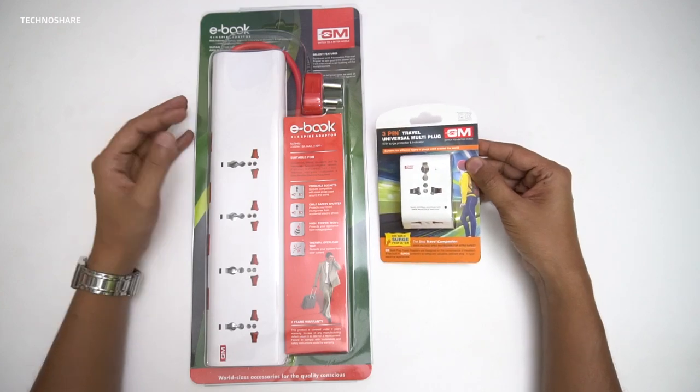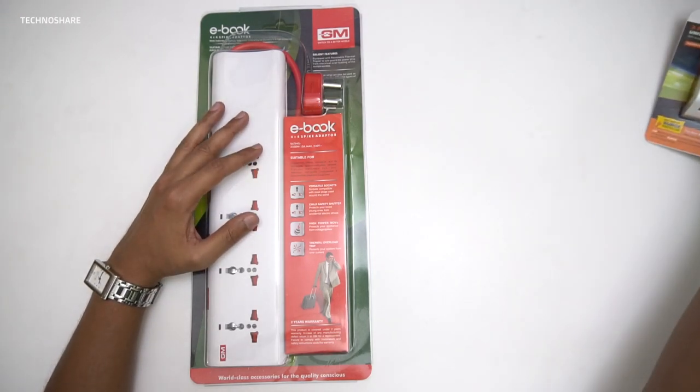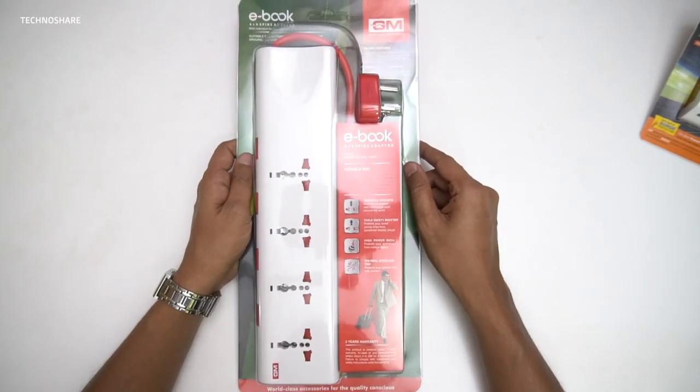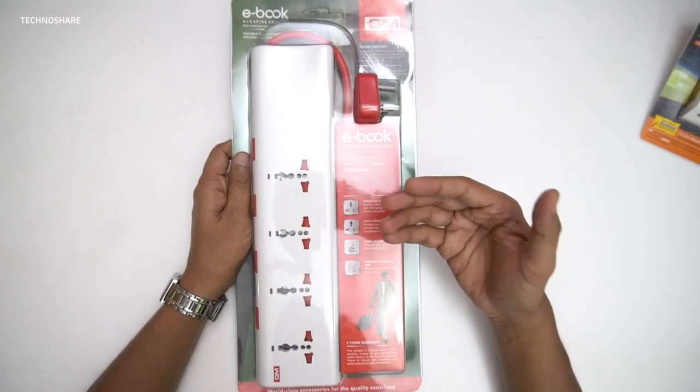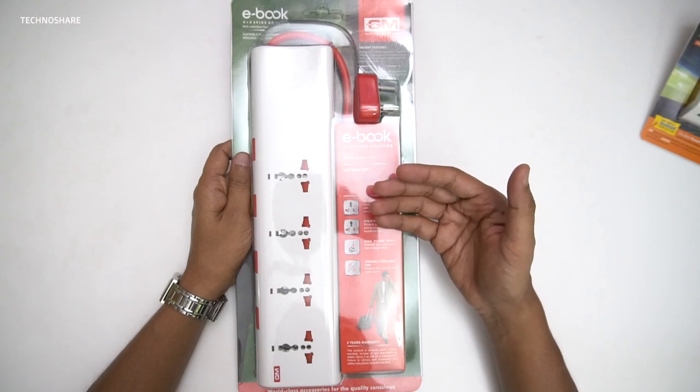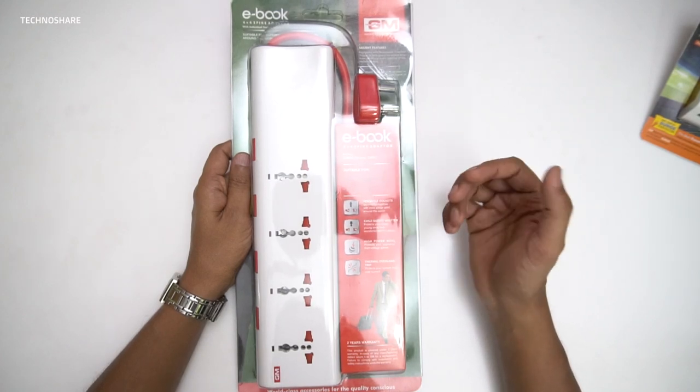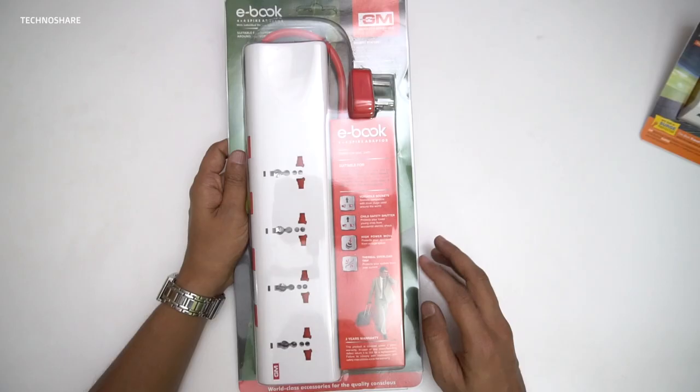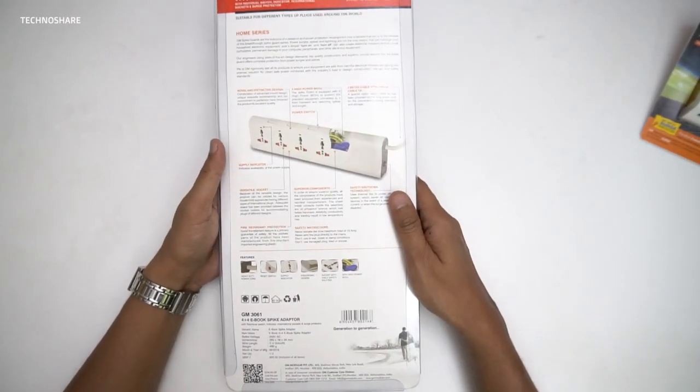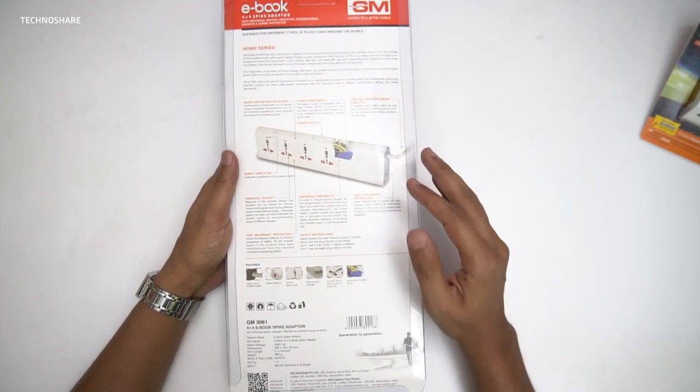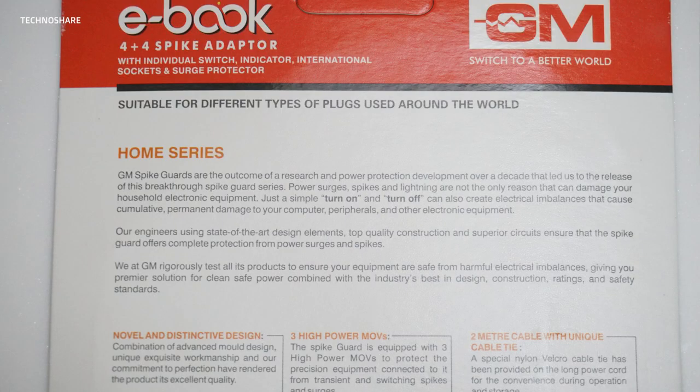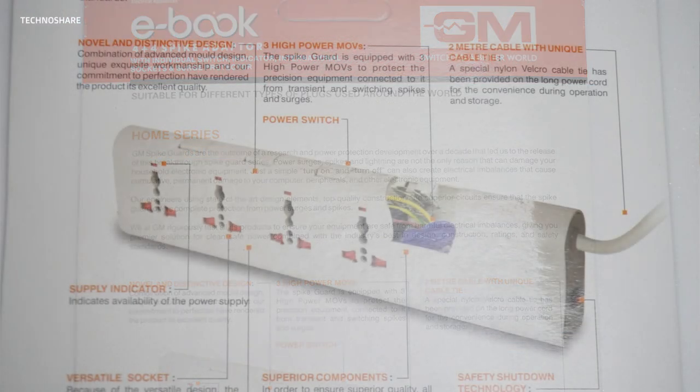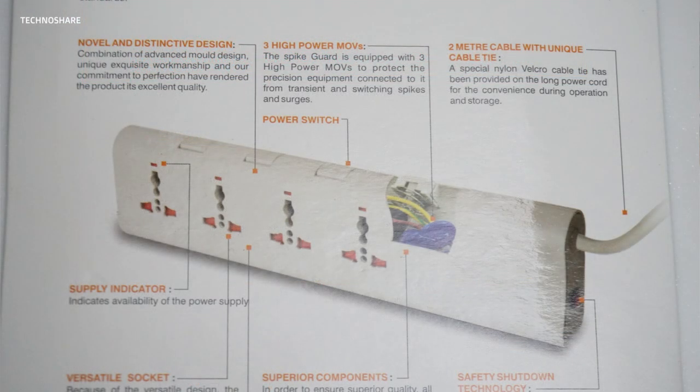Firstly, let's take a look at this spike adapter. I bought this mainly to plug in multiple appliances that includes my television, soundbar, telephone, and set-top box. You see a couple of features that are listed out here and also on the back side of this package. You can pause the video if you wish to read these details. I will visit these features later on in this video.